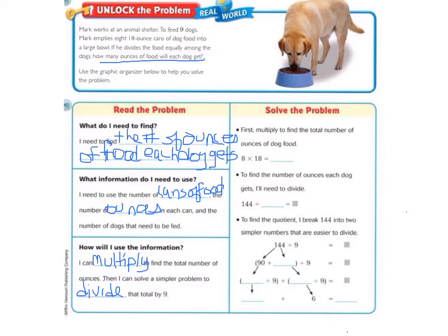So now that we have all of the information, we've really read the problem carefully using our close reading skills, we're going to look on the right where it says solve the problem. First, multiply to find the total number of ounces of dog food. So we have eight cans of 18 ounces each of dog food. So eight times 18 equals 144 total ounces of dog food.